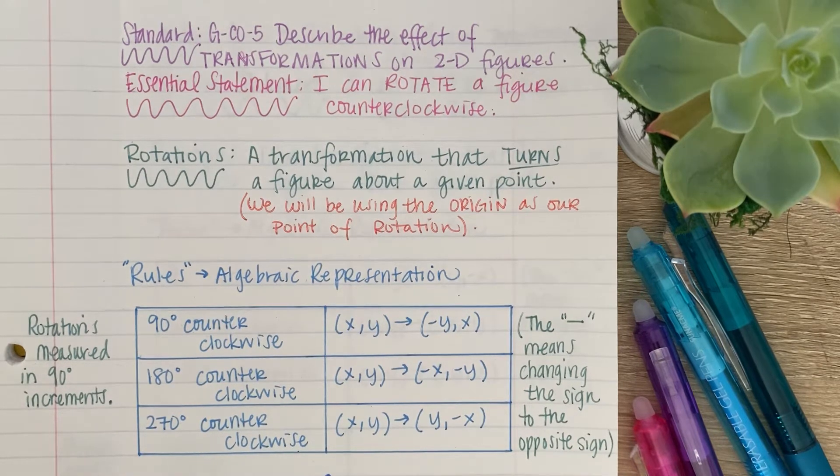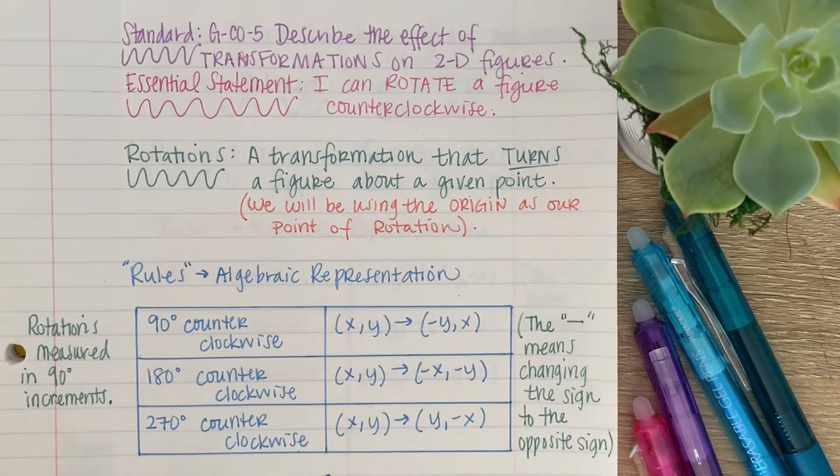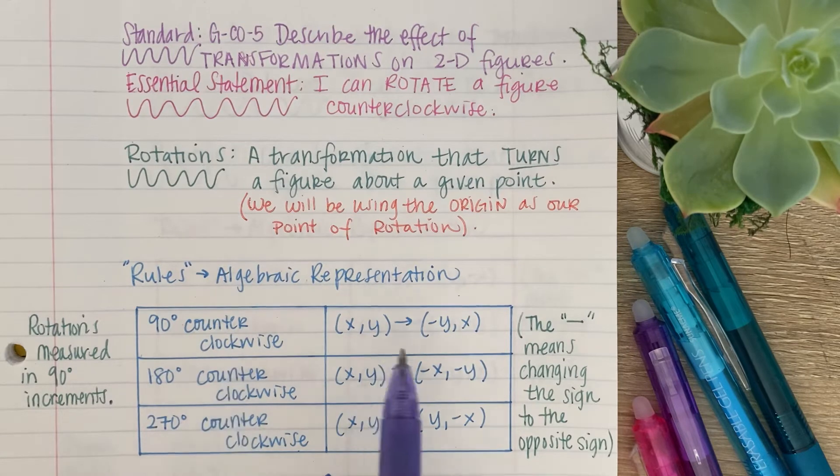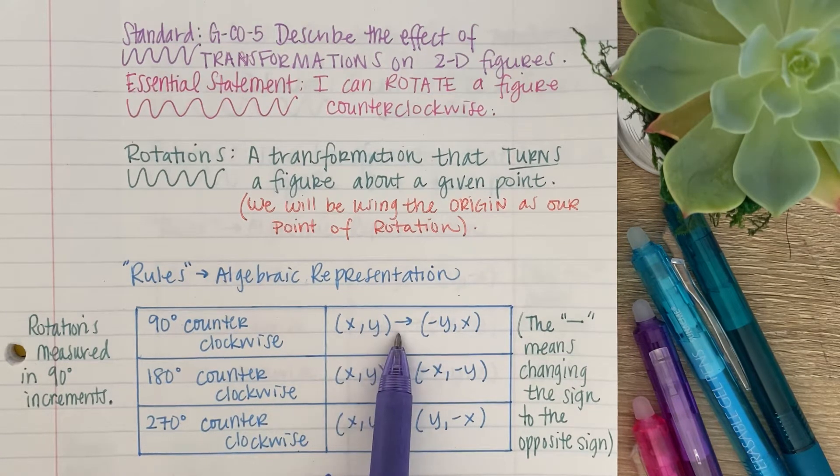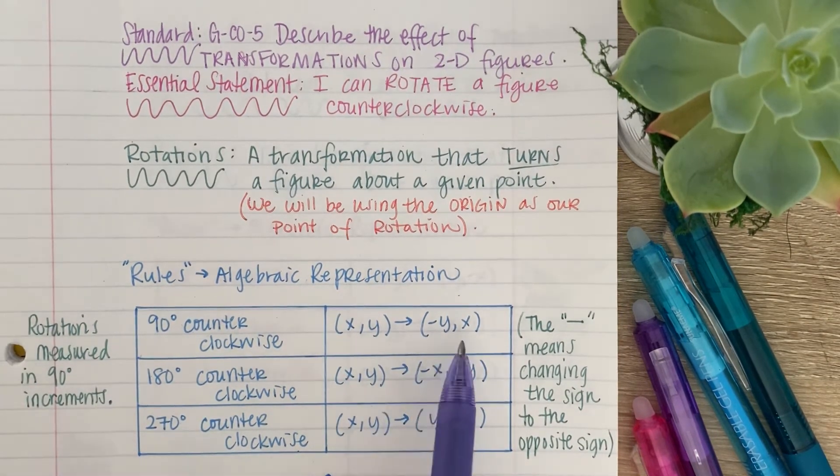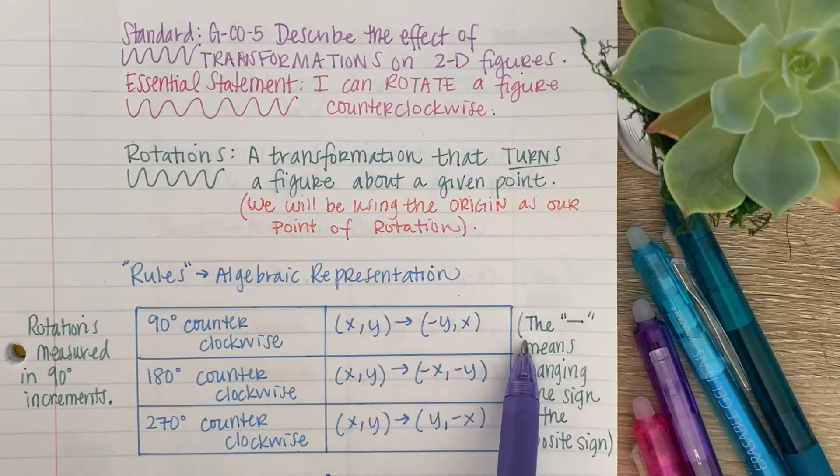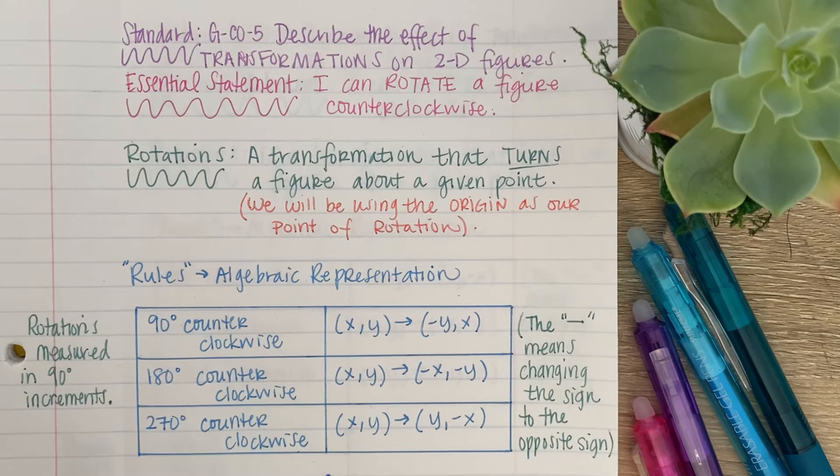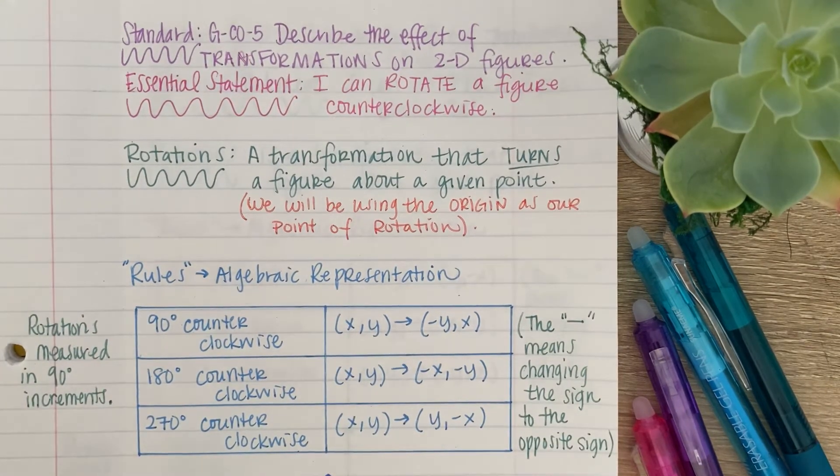Now, rotations are measured in 90 degree increments, and one rotation is 90 degrees, two is 180, three is 270 degrees, and back to your original figure is 360, and that's why you don't see that in our rules. Now, if we are rotating 90 degrees counterclockwise, you take your ordered pair, (x, y), and what happens to it? You flip the x and the y, and then you change the sign on the y. This negative means you're changing the sign to the opposite sign. It doesn't mean you're making it negative. It means you're changing the sign to the opposite sign. So if it was negative, you make it positive. If it's positive, then you can make it negative.